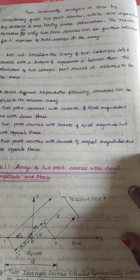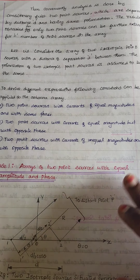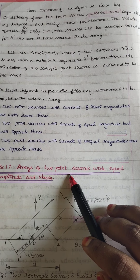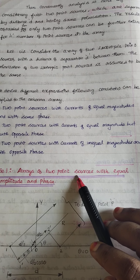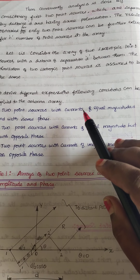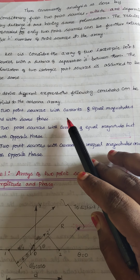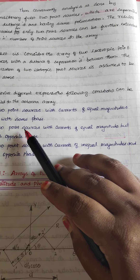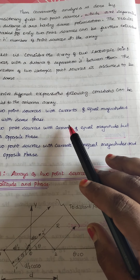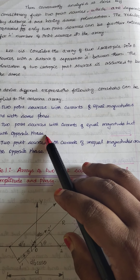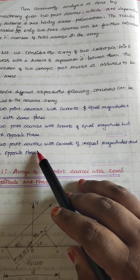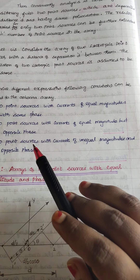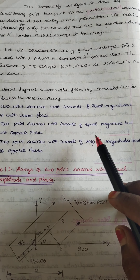Good morning students. In the next topic, we are going to analyze two point sources. We are considering two point sources as two antennas. We are considering three cases: one is two point sources with currents of equal magnitude and same phase; another is two point sources with equal magnitude but opposite phase; and the third case is two point sources with unequal magnitude and opposite phase.